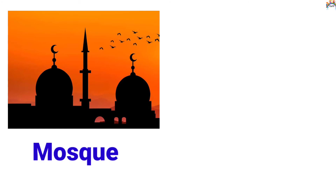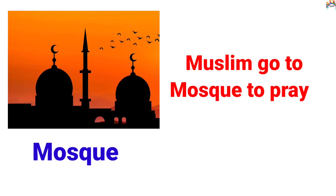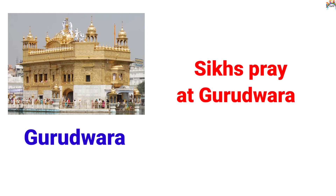Tell me the next picture. Identify the picture and tell me which place this is. Yes, this is a mosque, and Muslims go to the mosque to pray. Now see the next picture — which place is this? Tell me the place of worship. Yes, this is a Gurudwara, and Sikhs pray at the Gurudwara.